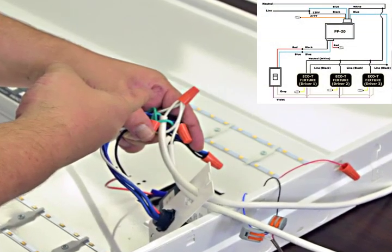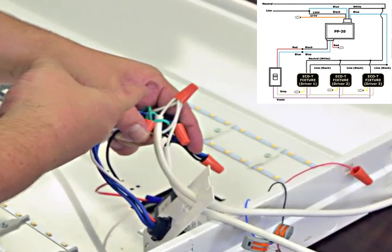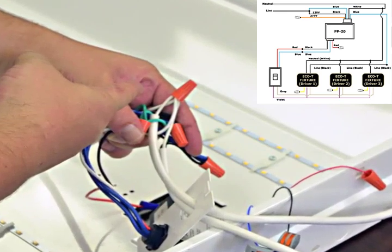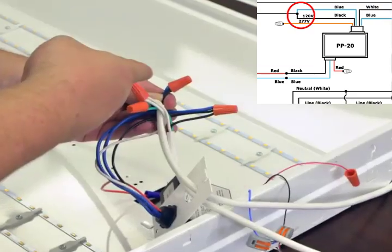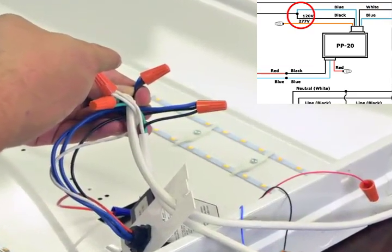In 277 volt applications, you will need to cap off one of the two blue wires and tie the orange and black from the PP-20 to the main power line. In this case, we have 120 volt, so we will cap off the orange, we will tie one blue with the black from the PP-20 together with the main power line.